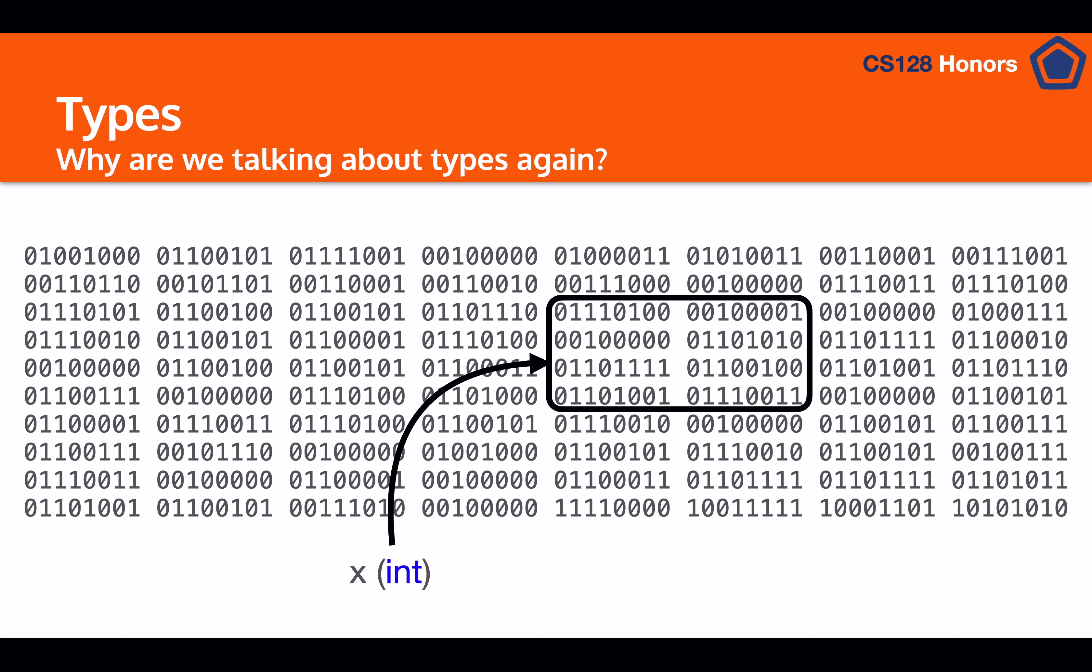It could be that x being an int, it's whatever that number comes out to be. Or it could be being a string, it's a completely different string as opposed to the number. This binary data is potentially many different things at once, and we need to give it a type to make sure that we know which thing that we're talking about.